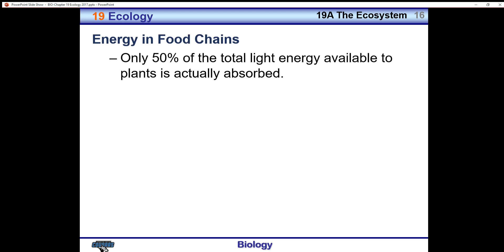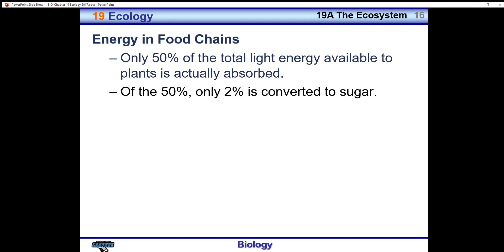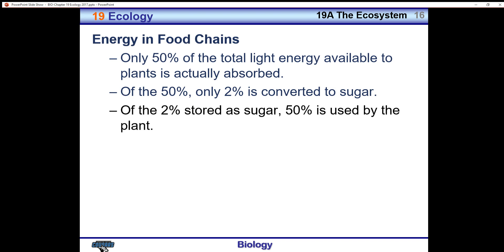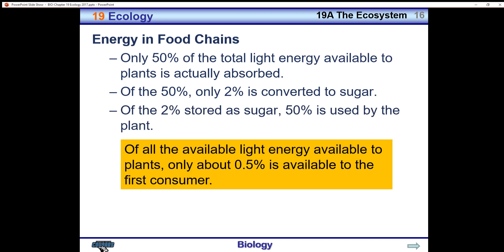Regarding energy in the food chain: only 50% of the total light available to plants is actually absorbed. Of that 50%, only 2% is ever really converted into sugar by the plants. Of that 2% stored as sugar, 50% is used by the plant itself. Because of this, only about half a percent of all available energy is available to the first consumer — the herbivores — and every additional layer of consumer receives less and less energy.